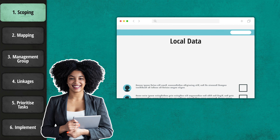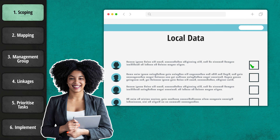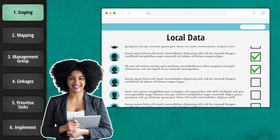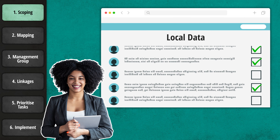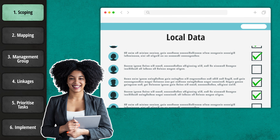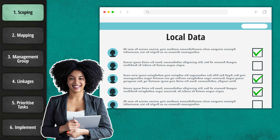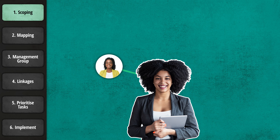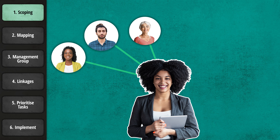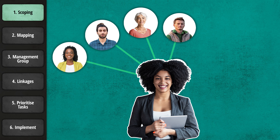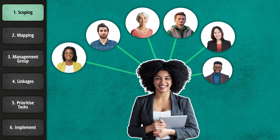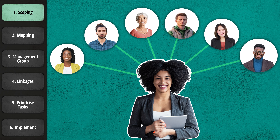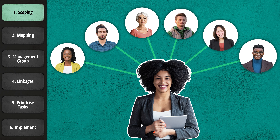First, Martha used a range of open access resources on the internet to see what was already being done and find the people connected to this problem. Soon she had a large number of local people, including farmers, residents, organisations and councillors, all interested in collaborating together in shared problem solving.